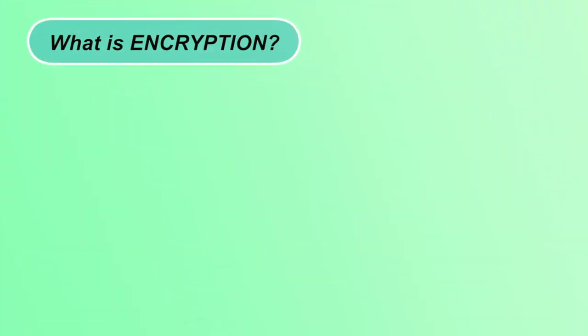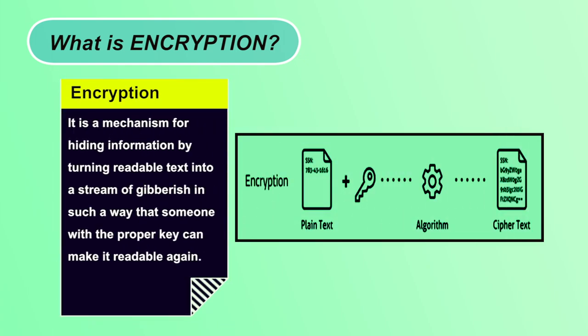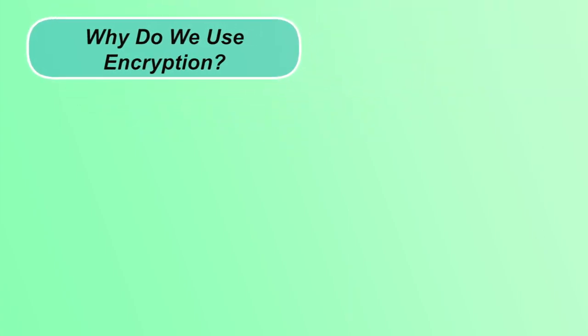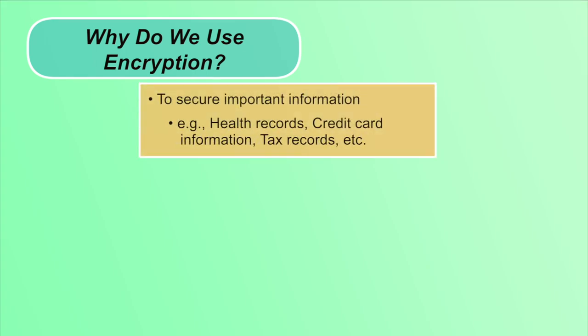Let's start with encryption. Basically, it is a mechanism for hiding information by turning readable text into a stream of gibberish in such a way that someone with the proper key can make it readable again. It is a process of converting plain text to ciphertext so that only the person who has the key will be able to read the message. Encryption is used to secure health records, credit card information, tax records, etc.